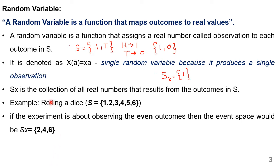Another example is rolling a dice. When I roll a dice, there are 6 possible outcomes: 1, 2, 3, 4, 5, 6. And if the favorable observation I need to make is only even outcomes, then we define the event space as Xx equal to {2, 4, 6}.